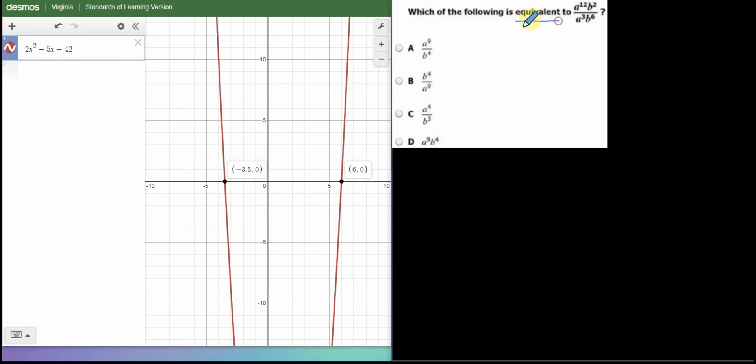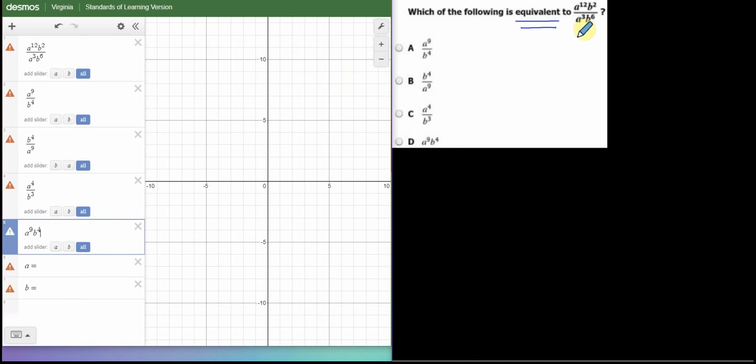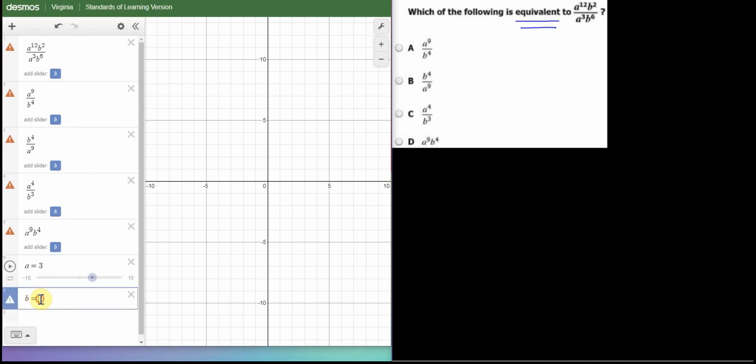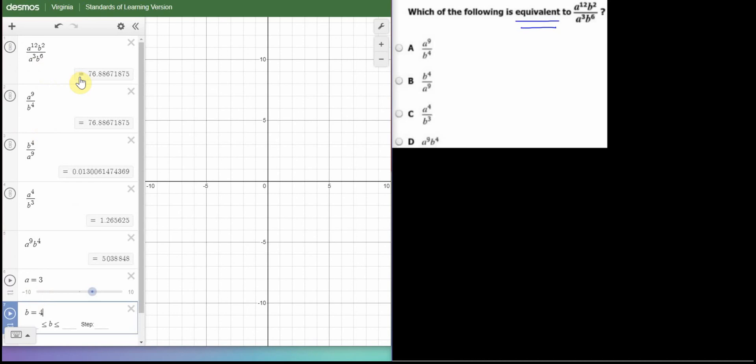Alright. Which of the following is equivalent to, again, which of these four is equal to that when you plug in numbers for A and B? So, once again, you can see I put the original expression in. And, I put all four answer choices. And, now I have to tell it what to use for A and B. And, again, I'm going to use 3 and 4. So, A is 3. B is 4. Look at my original expression is 76 point something. None of these other ones are even approaching that. The only one that gives me the same answer as the original expression is first choice. The only one that gives me the answer is A to the 9th, B to the 4th. And, a lot of you guys probably solved this one without using Desmos. But, again, I'm doing SOL review to teach you how you can use Desmos to get answers or at least check your answers.